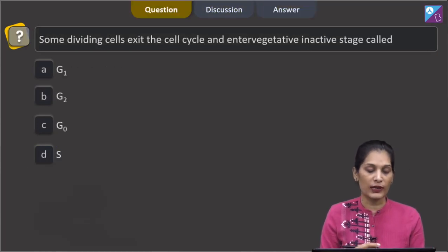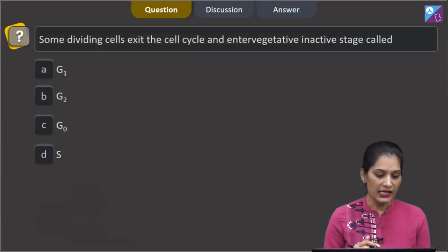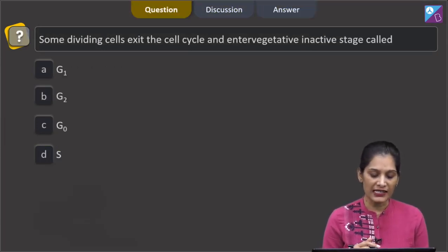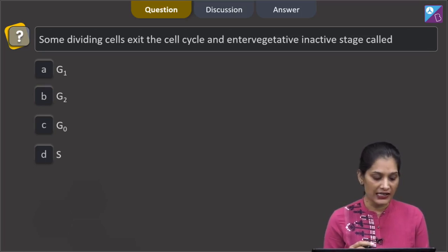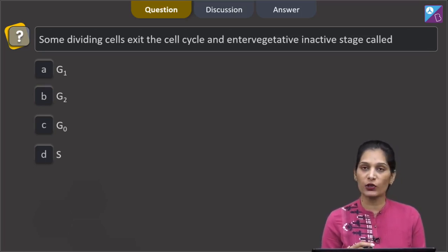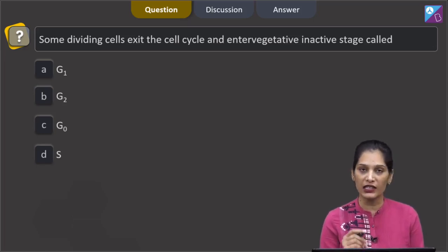Let us move to the next question. This question says some dividing cells exit the cell cycle and enter vegetative inactive stage called G1, G1, G2 and S. They are the sub phases for the interphase where a cell prepares itself for the division.